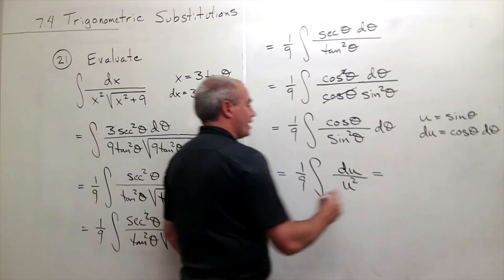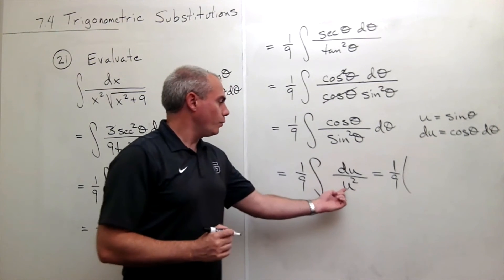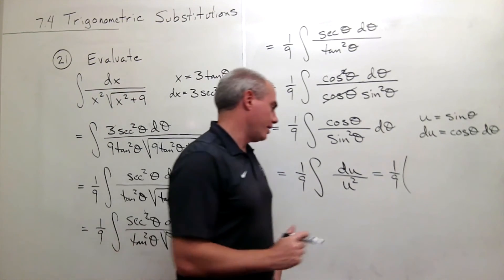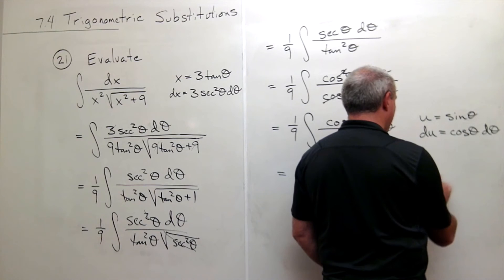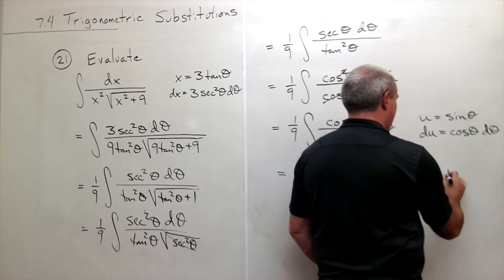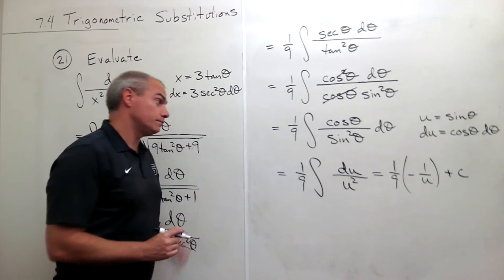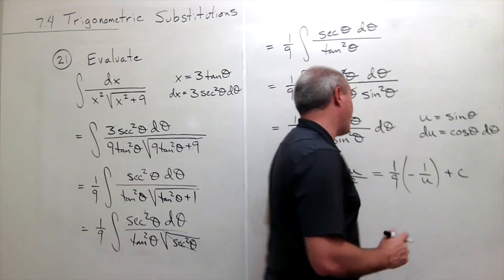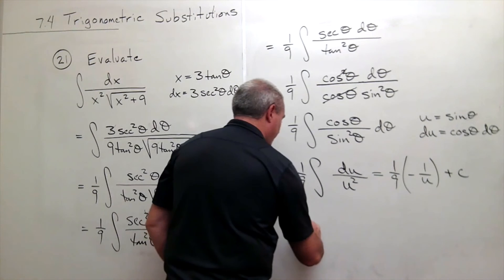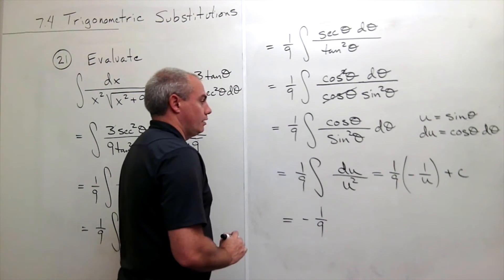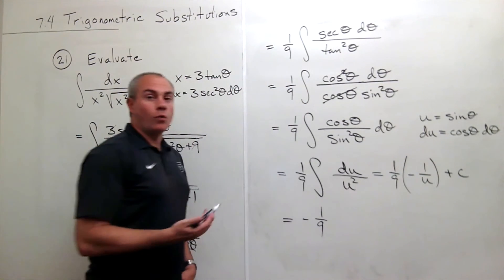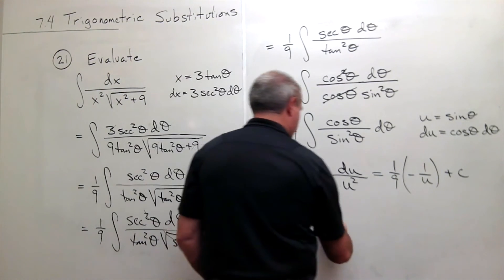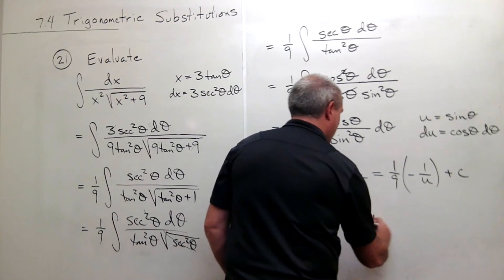Let's integrate it. When I do, I get 1 9th times, when I take the anti-derivative of u to the negative 2, I get u to the negative 1 times negative 1. So I get negative 1 over u plus c. Now we have to remind ourselves, what is u? In this case, u is sine of theta. So I can rewrite this, this is negative 1 9th times 1 over sine theta. 1 over sine theta has another name. We call it cosecant of theta. So this is cosecant of theta plus c.